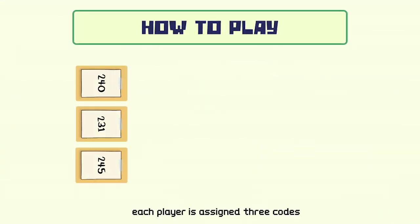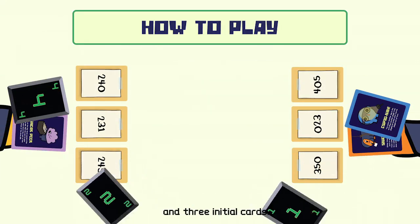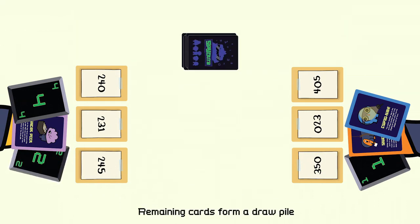Here's how you play. Each player is assigned three codes and three initial cards. Remaining cards form a draw pile.